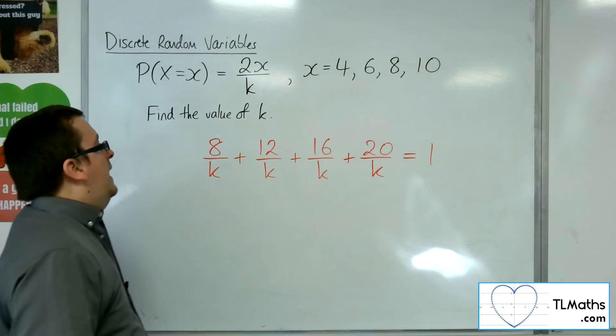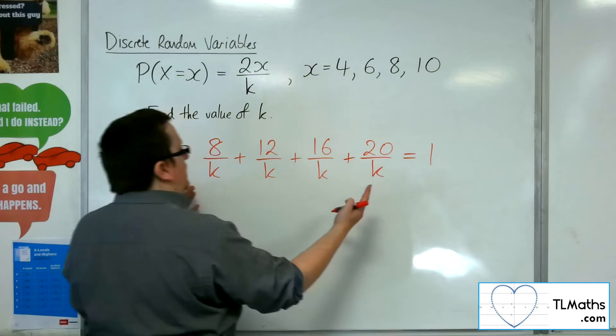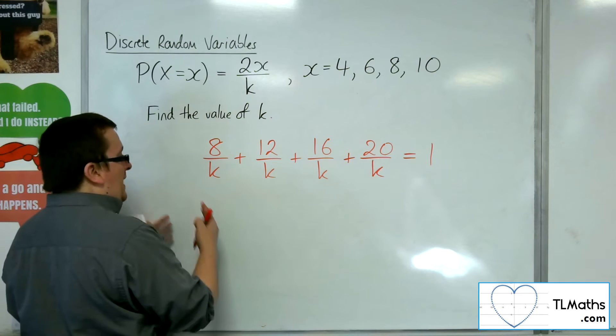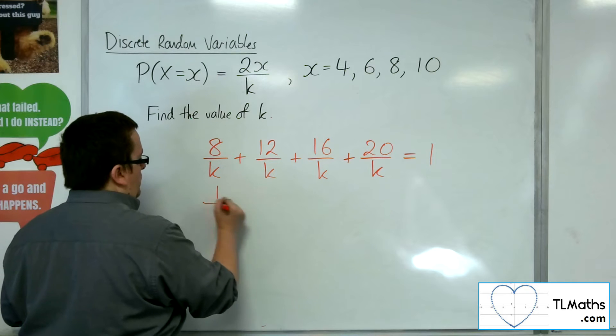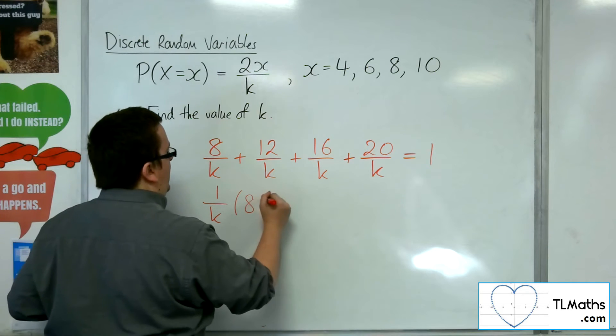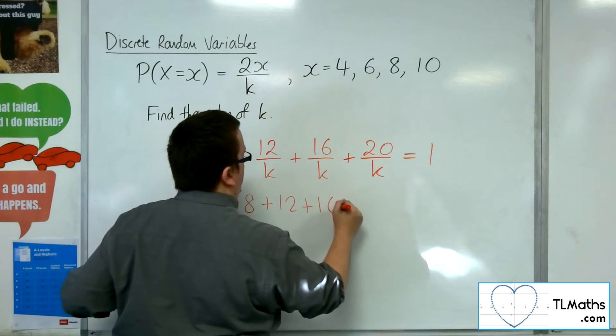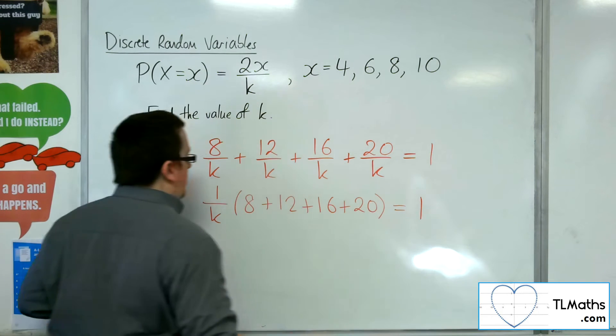So, if I then factor the 1 over k out, I would have 1 over k times 8 plus 12 plus 16 plus 20 is equal to 1.